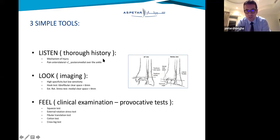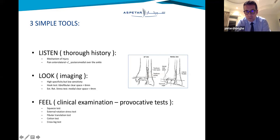How do you address them? You listen to the mechanism of injury — it's not a simple inversion, it's a different mechanism. Typically, patients have pain over the ankle sprain area, but the pain radiates up, and that's not typical for a normal ankle sprain. That's something to look into.